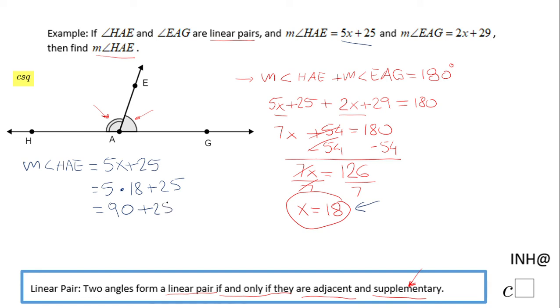5 times 18 plus 25. 5 times 18 is 90 plus 25, so we have the final answer for our problem: 115. This is the measure of angle HAE, 115 degrees. That means the other guy is going to be 180 minus 115, and that'll be 65 degrees.